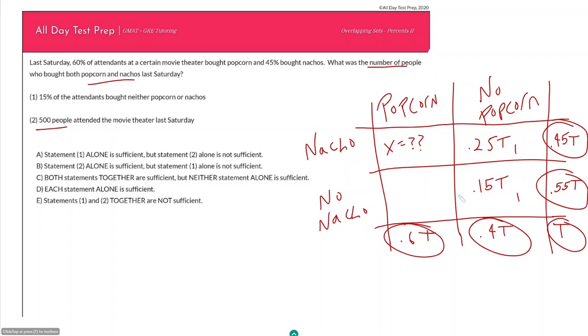So what does this mean? Based on this we can say that people that got popcorn without nachos should be 0.4T, because we got 0.55T here. That means this box here, the box that we're looking for, is 0.2T or 20 percent of my people bought nachos but no popcorn.